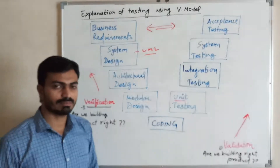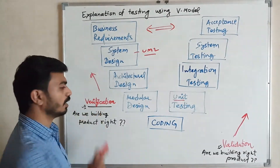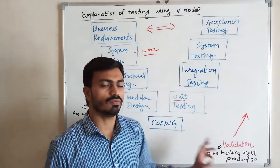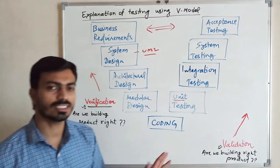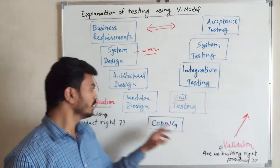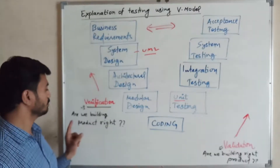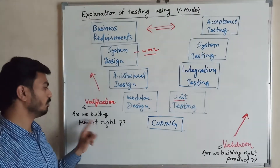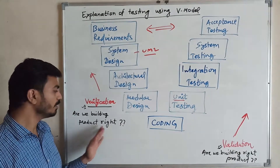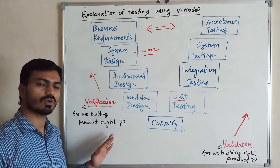V-Model means there are two terms: Verification and Validation. What is the difference between Verification and Validation? The first thing is Verification, it is called 'Are we building the product right?' That means the process is being followed properly.